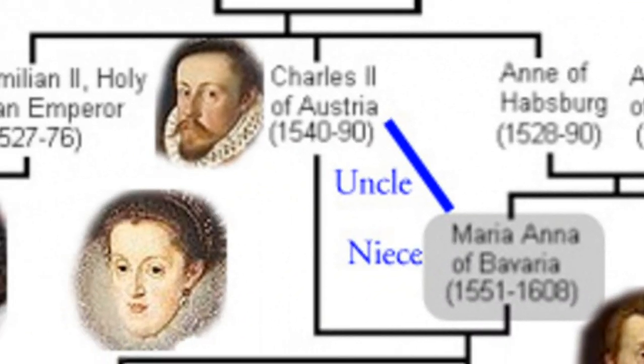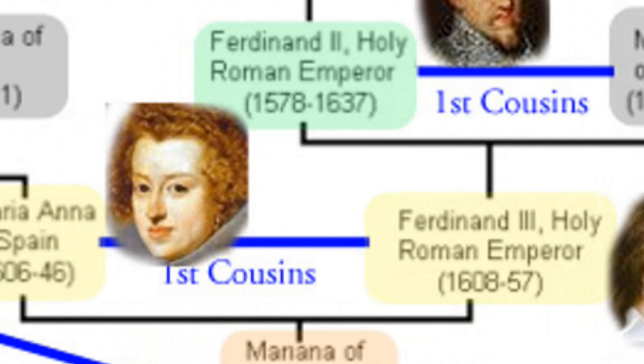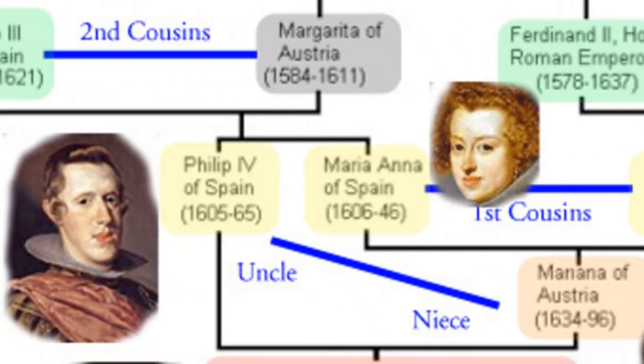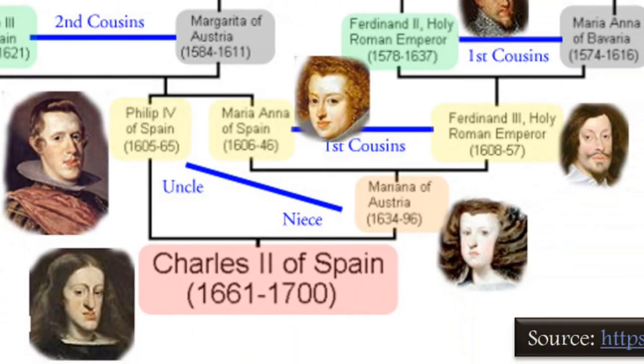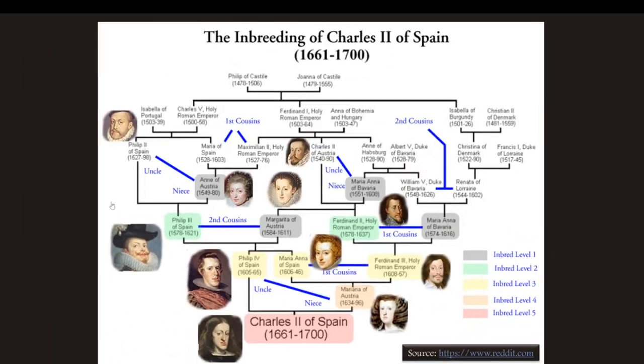But then when it happens again — uncle, niece, second cousins, first cousins, first cousins again, another uncle and a niece — we finally get to Charles II of Spain at level five. It's like he just won some sort of negative inbred lottery.